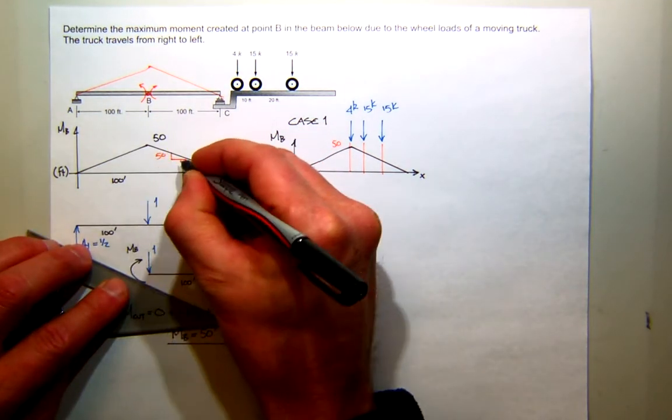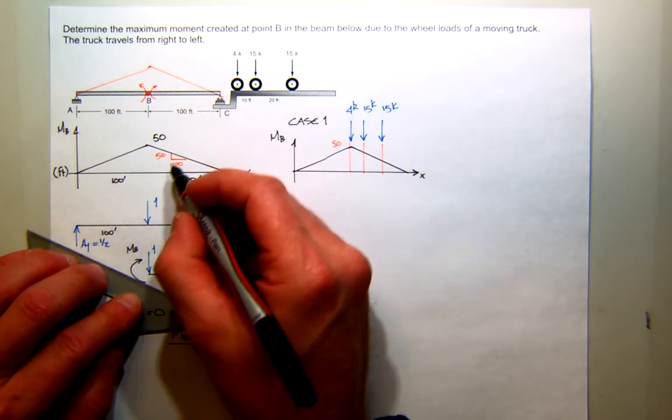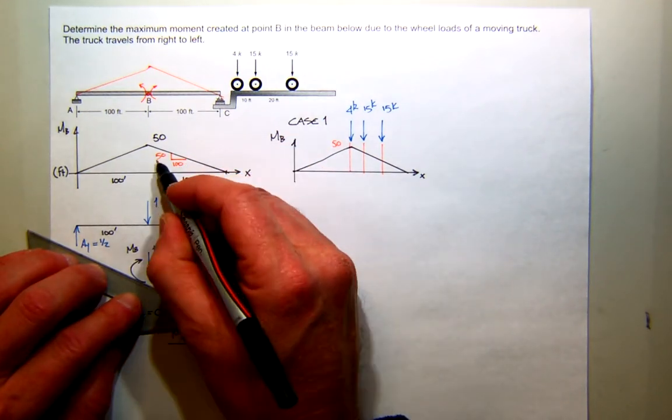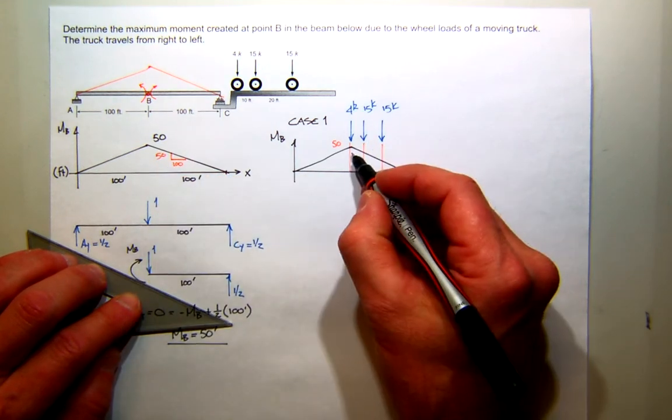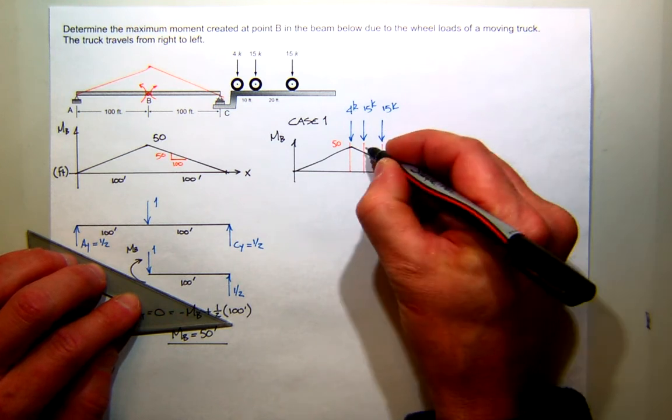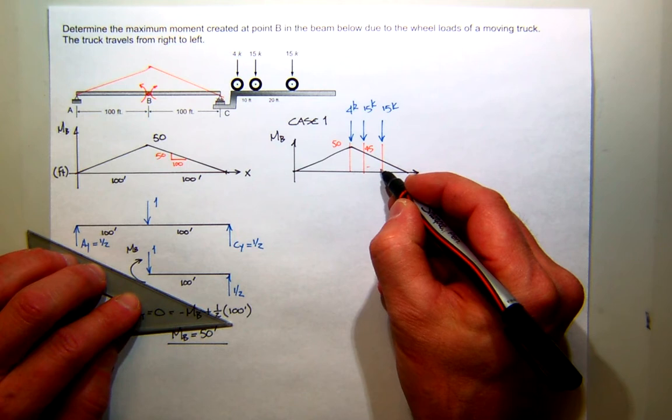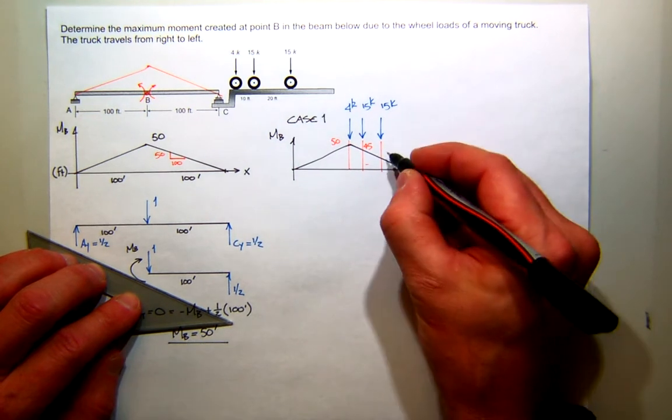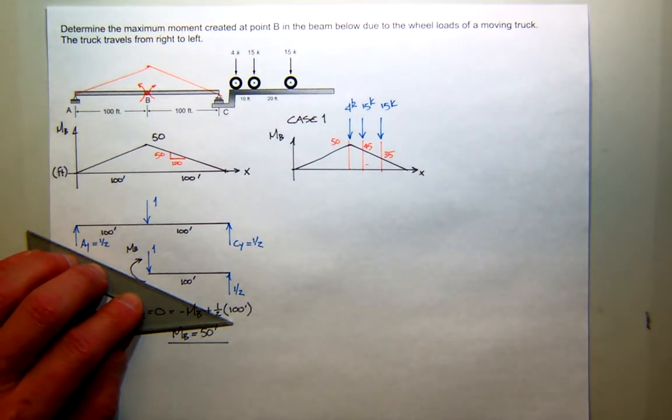What's the slope of my influence line? It's 50 to 100, which is really 1 to 2. Or, for every foot I go this way, I drop one half. If I go 10 feet, that means I drop 5, so this should be 45. If I go another 20 feet, I should drop 10, so this should be 35. Everybody see that?